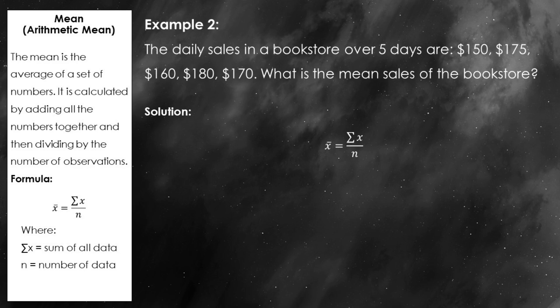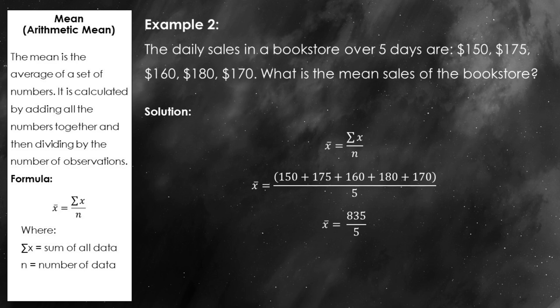Let's walk through another example together. This time, we're going to calculate the mean daily sales of a bookstore over 5 days. The sales numbers for each day are $150, $175, $160, $180, and $170. To find the mean, we follow the same simple steps: first, we sum up all the daily sales. 150 plus 175 plus 160 plus 180 plus 170 equals 835. Next, we divide the total by the number of days, which is 5. So mean equals 835 divided by 5, which equals 167.